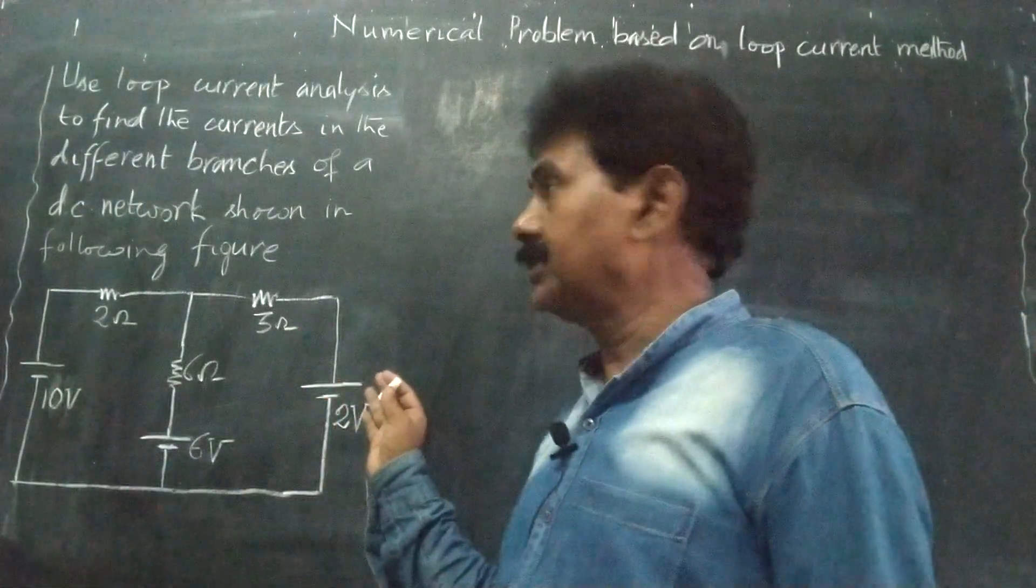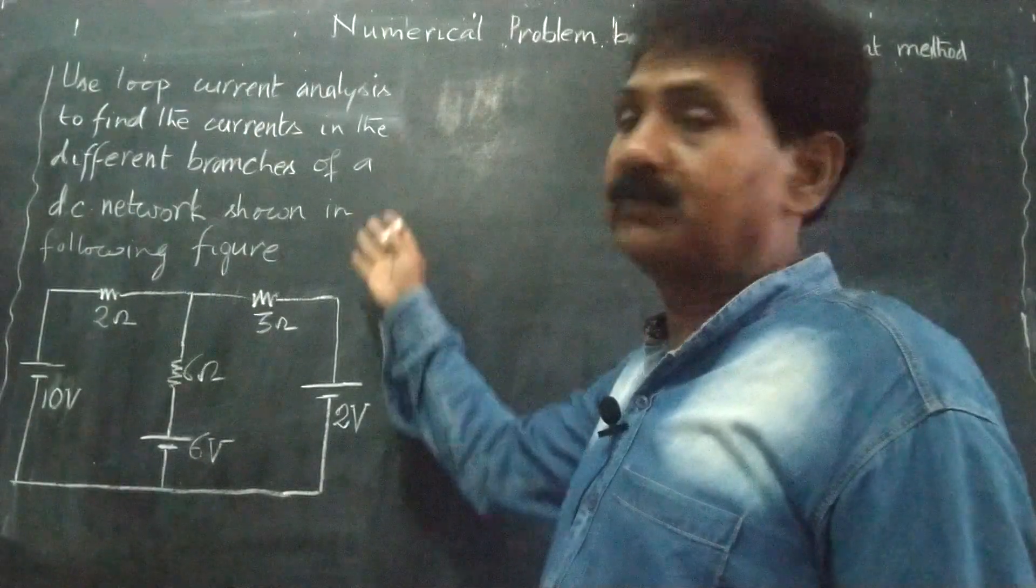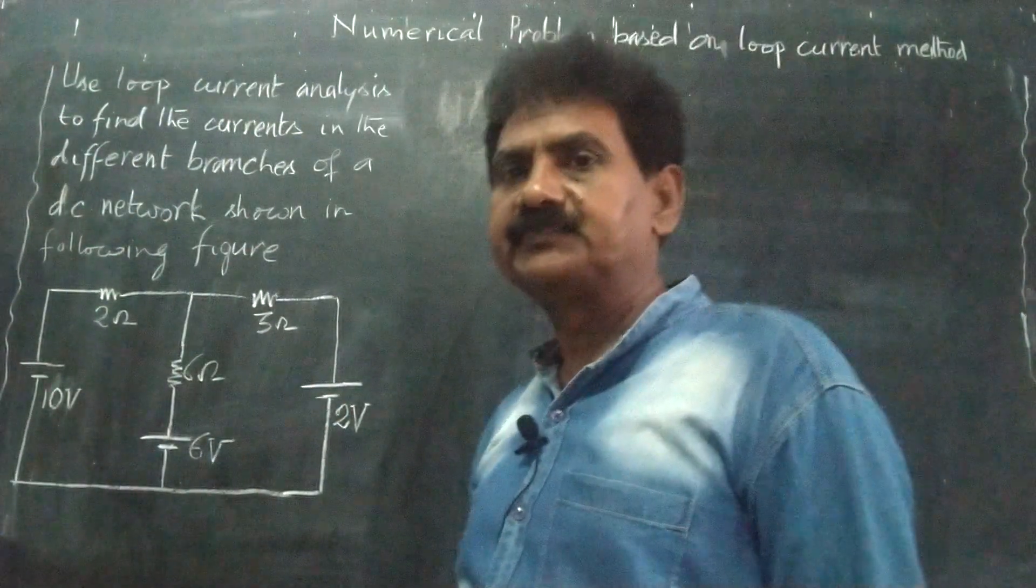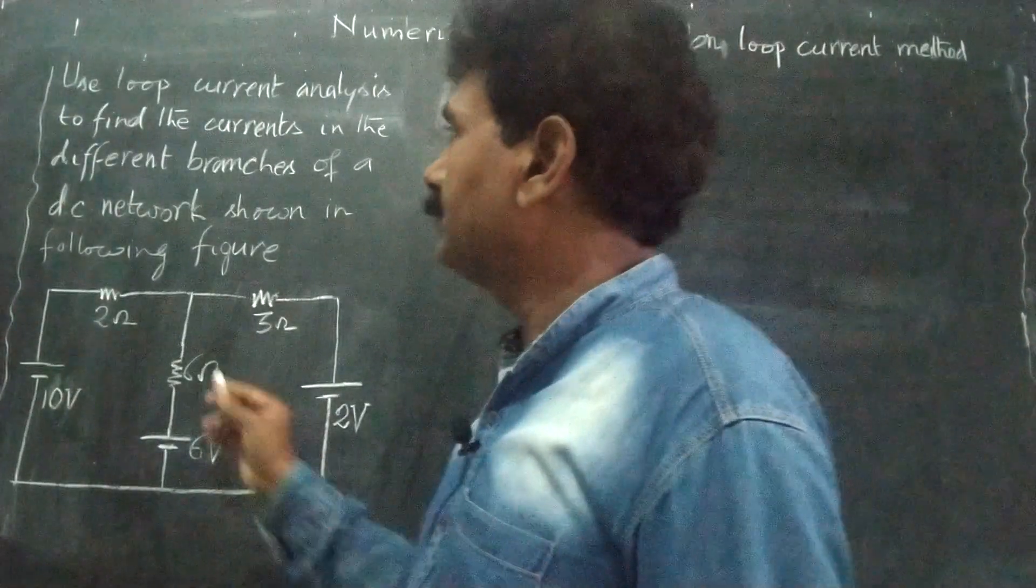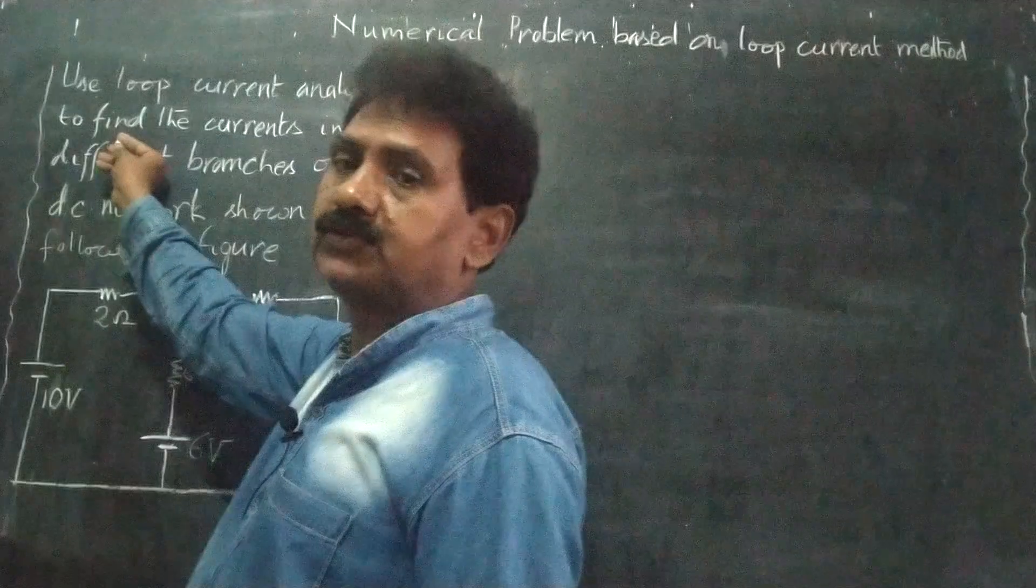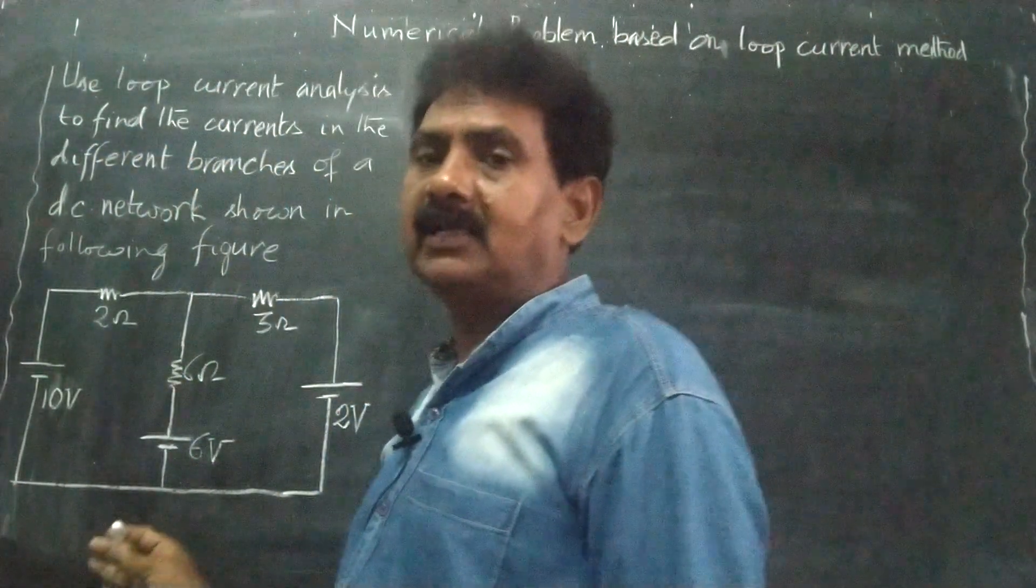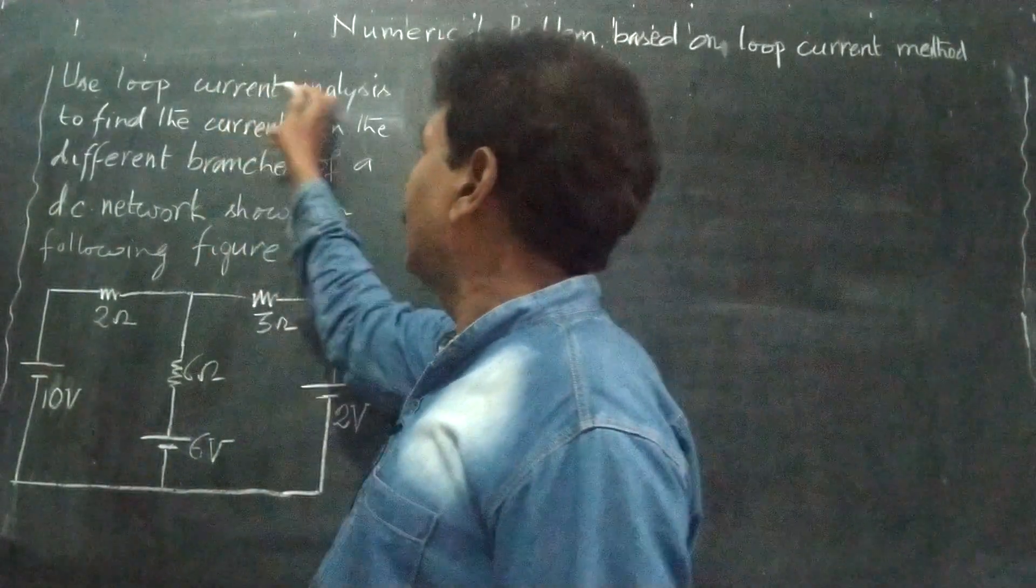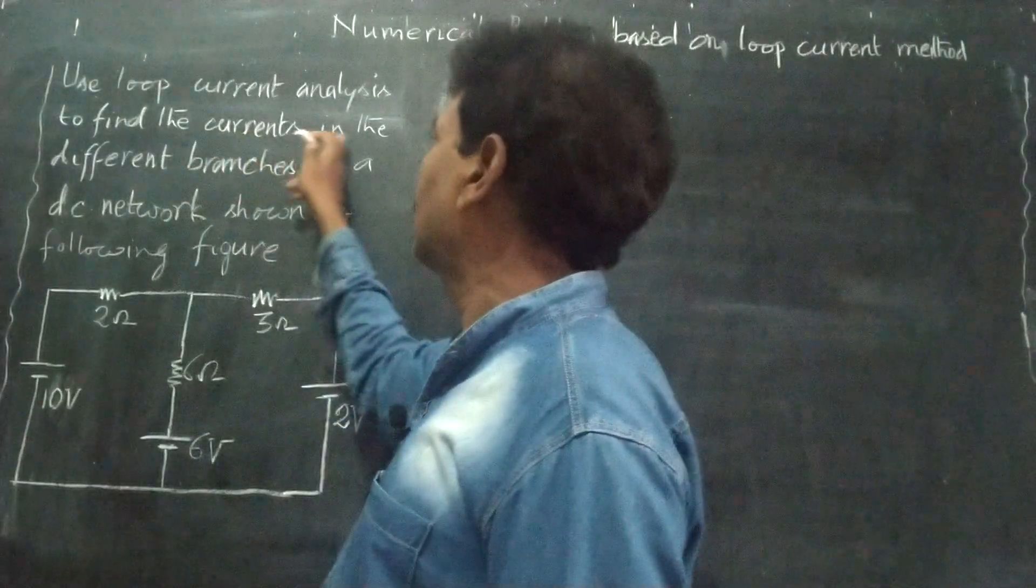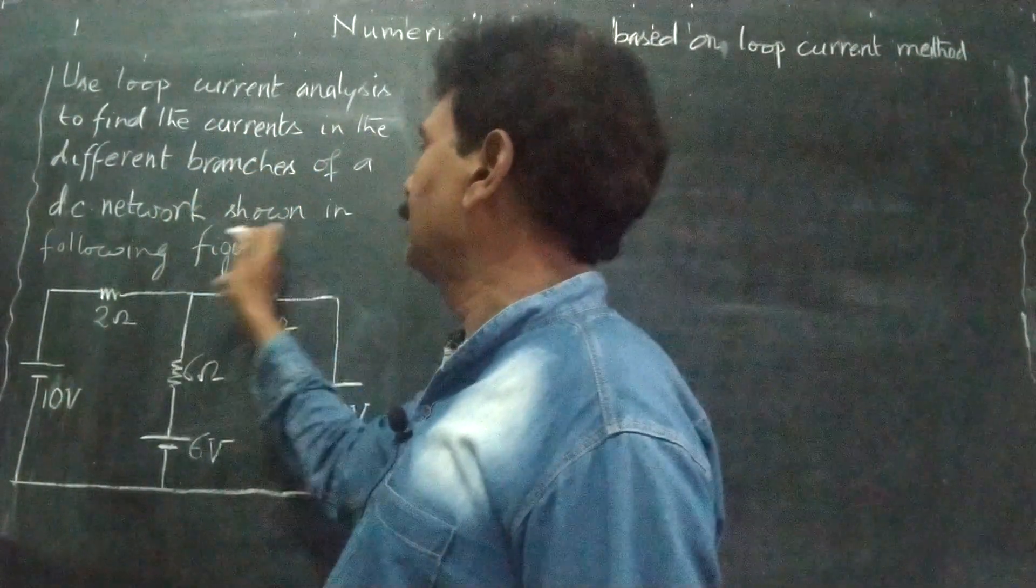Okay students, now let us take one example of numerical problem based on loop current analysis. Then what is the numerical problem? Here, use loop current analysis to find the currents in the different branches of a DC network shown in following figure.